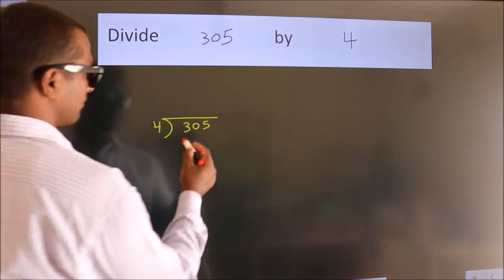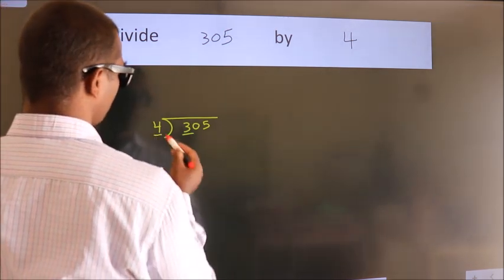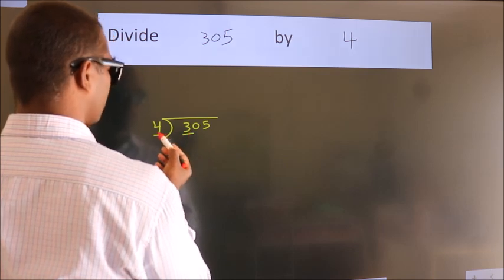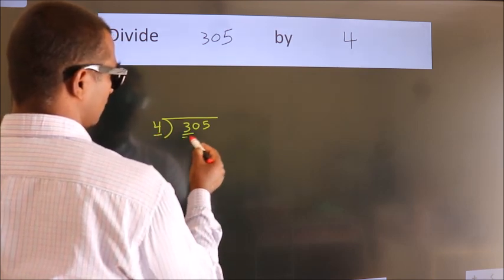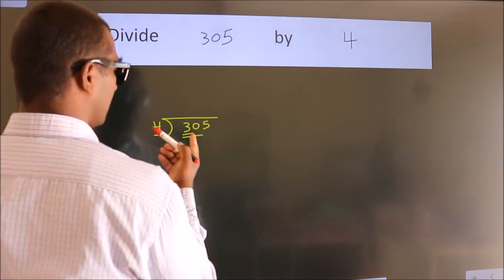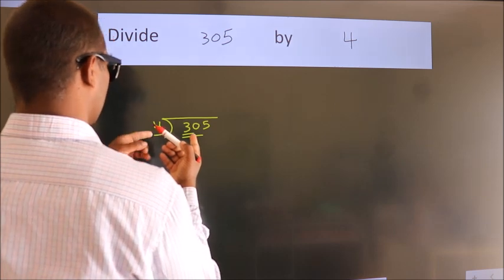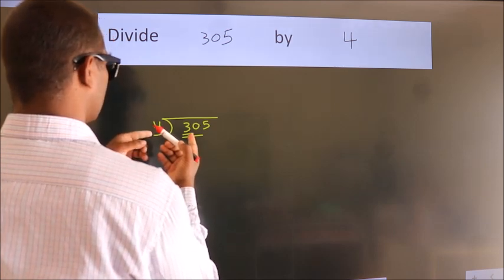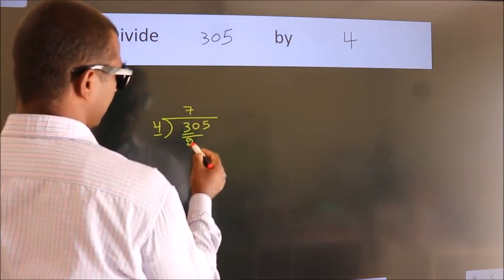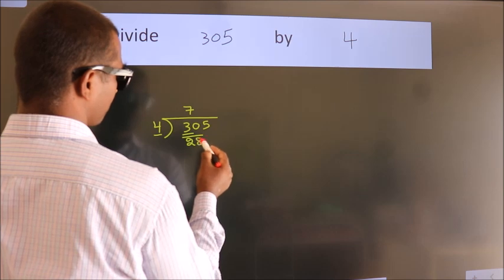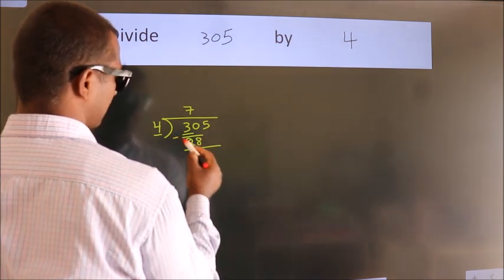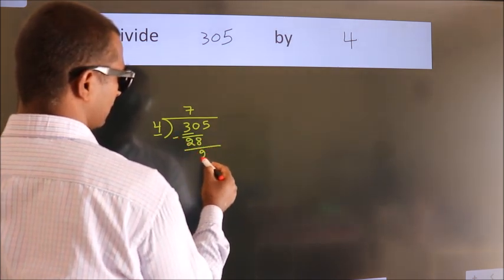Here we have 3, and here 4. Since 3 is smaller than 4, we should take 2 numbers: 30. A number close to 30 — in the 4 times table is 4 sevens, 28. Now we subtract and we get 2.